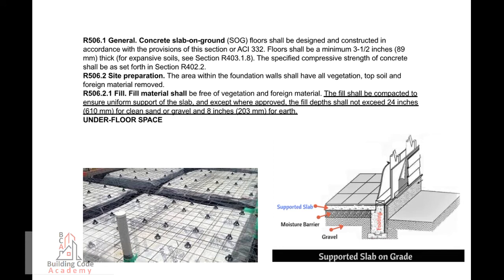R-506.1, General. Concrete slab on ground floors shall be designed and constructed in accordance with the provisions of this section or ACI-332. Floors shall be a minimum 3-1/2 inches (89 millimeters) thick. For expansive soils, see section R-403.1.8. The specified compressive strength of concrete shall be as set forth in section R-402.2.